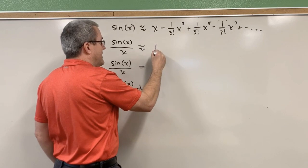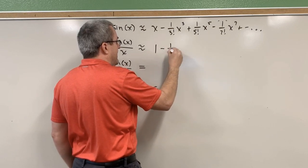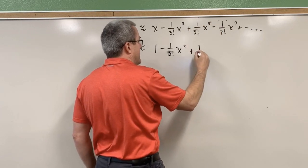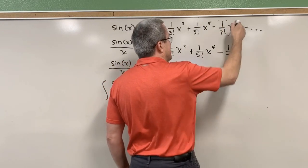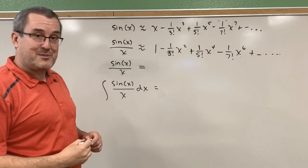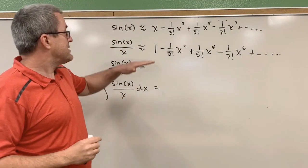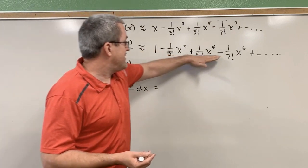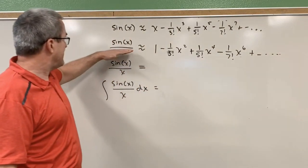X divided by X gives one. If you divide the next term by X, that X cubed becomes X squared. If you divide the following term by X, that X to the fifth becomes X to the fourth. If you divide the next term by X, that X to the seventh becomes X to the sixth. That pattern continues forever — our infinite Taylor polynomial. I encourage you to pause this video, go over to Desmos, type in sine of X over X, and then type in this polynomial with as many terms as you like, and see that it does indeed approximate sine of X over X.